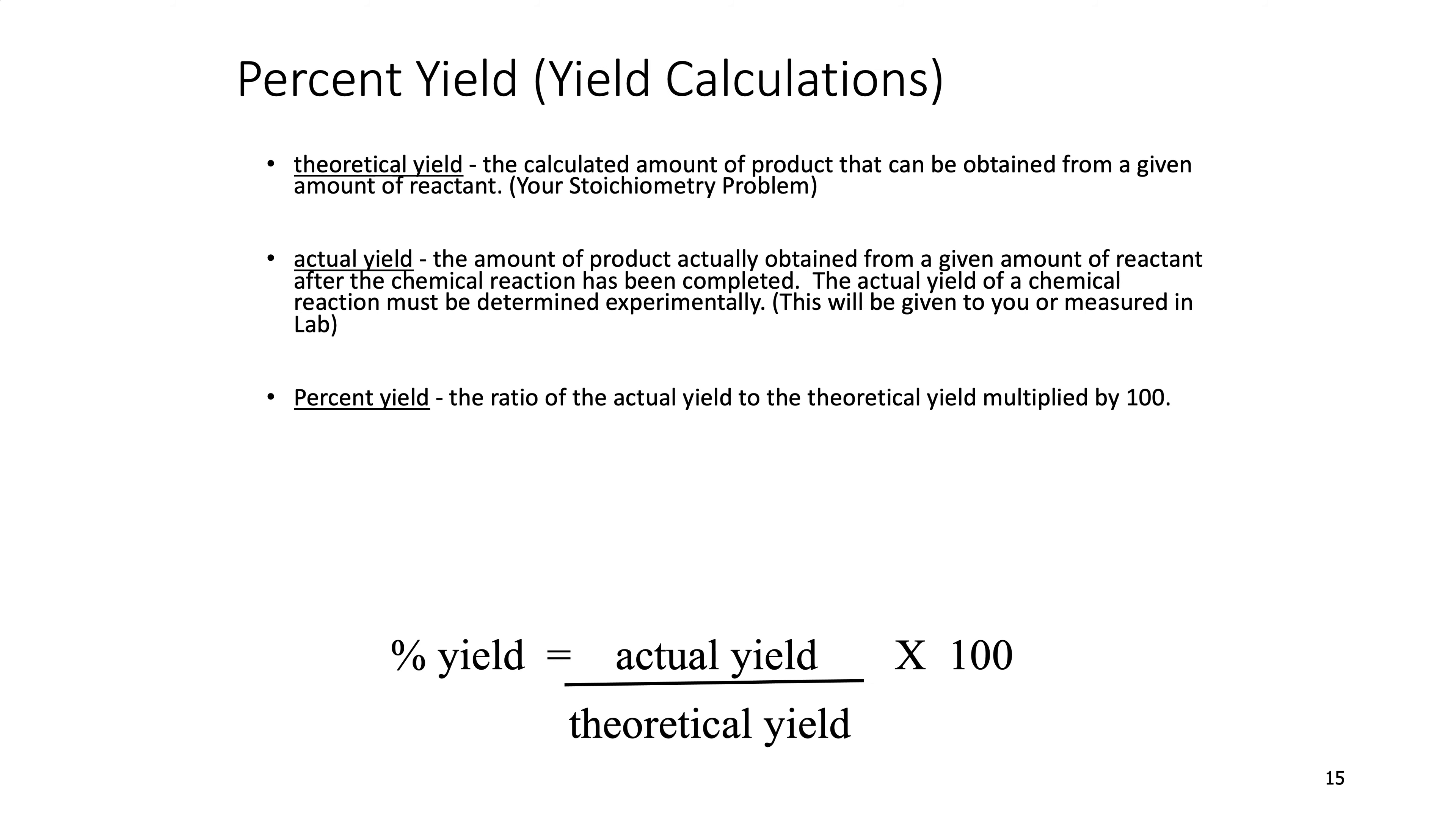Now, percent yield, the yield calculations, there's just some definitions. The theoretical yield is based on your calculations, your stoichiometry. That's how much you should get. So when you do the math, any of the problems we did, the silver phosphate problem, for example, that 3.28, I think it was, that was a theoretical yield. So it's calculated. Actual yield is what you really get. So when you actually did the experiment and purified the product and cleaned it out and put it in a beaker and you weighed it, how much did you really get? That's the actual yield. And the percent yield is the actual over the theoretical times 100.